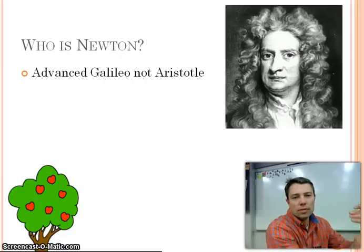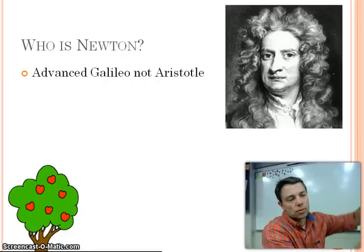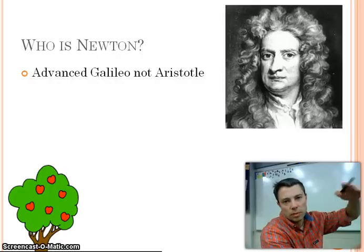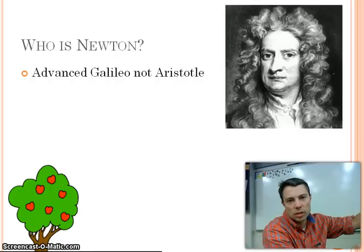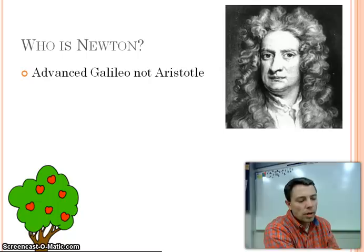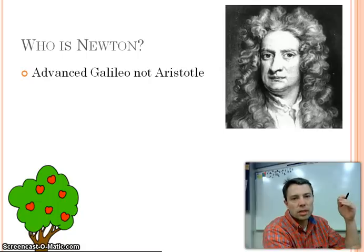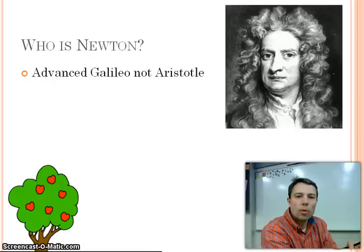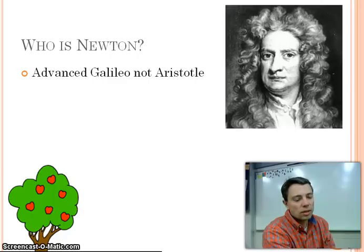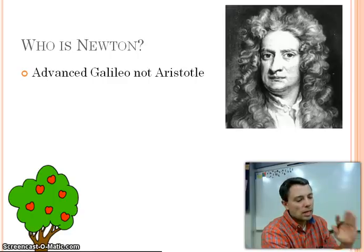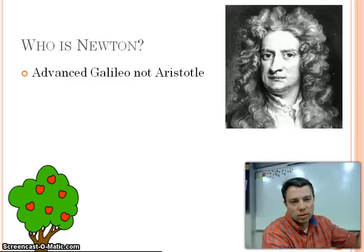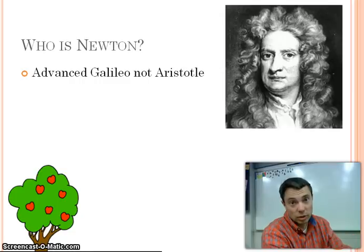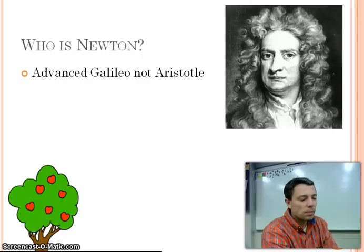Newton essentially took the stuff that Galileo did. And Galileo was the one who studied objects rolling down ramps. And we looked at this, and he determined that there was this acceleration due to gravity. And what Newton was able to do was he was able to take the things that Galileo said and advance it further in science. See, there was a kind of counterpoint that was going on in this, and it was our lovely Greek philosopher, Aristotle.